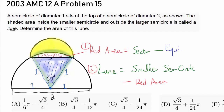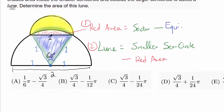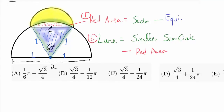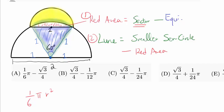To find the red area, we need to find the area of the sector and take away the area of the equilateral triangle. The area of the circular sector — because we have a 60-degree angle, which is 1/6 of 360 degrees — is 1/6 × π r². The radius of the larger circle is 1, so the sector area is 1/6 × π × 1² = π/6.